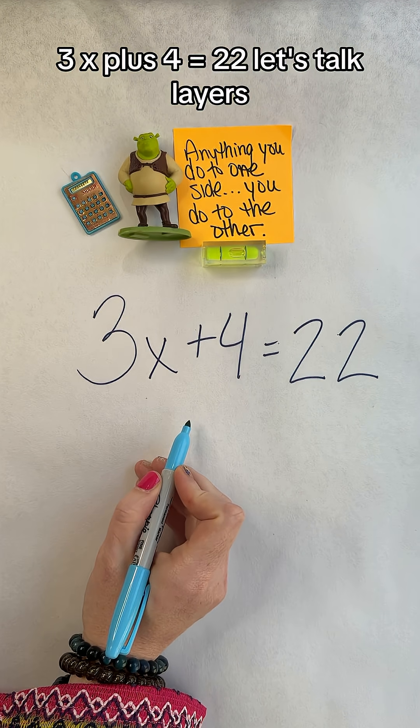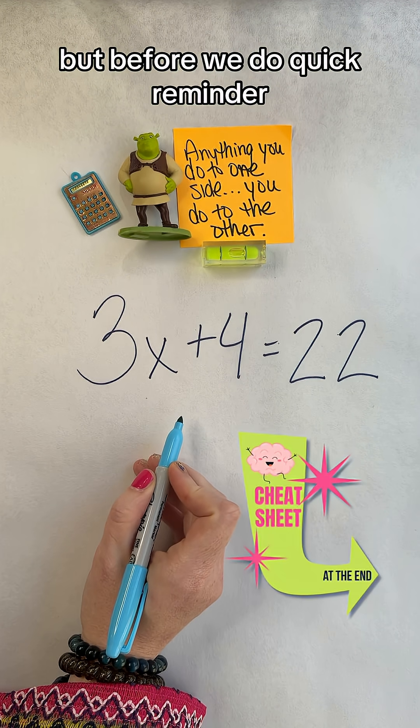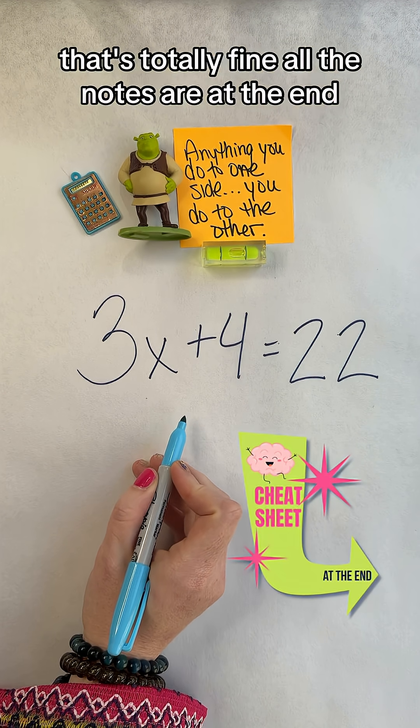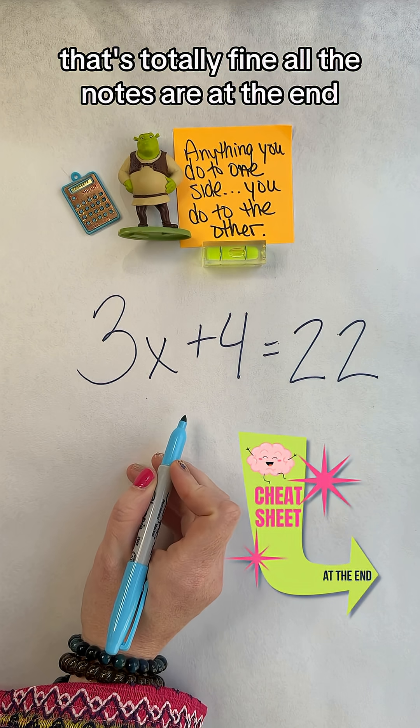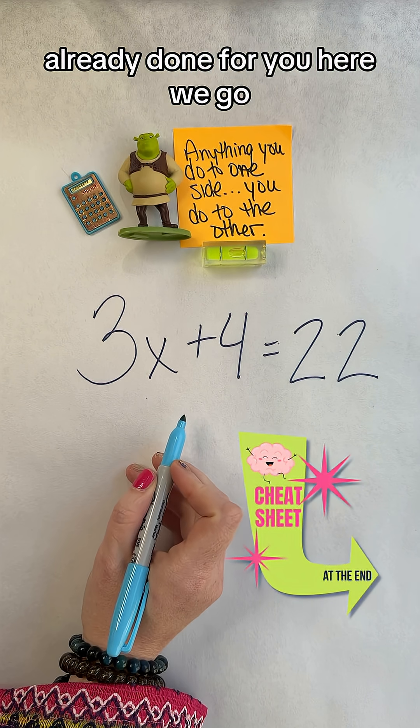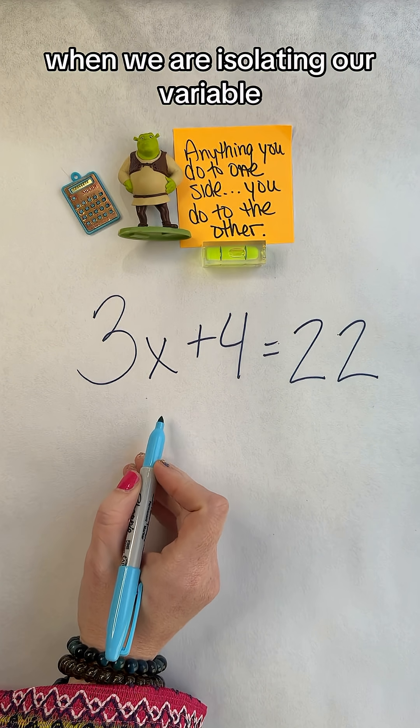3x plus 4 equals 22. Let's talk layers, but before we do, quick reminder: if you didn't bring your pencil, that's totally fine. All the notes are at the end, already done for you. Here we go.